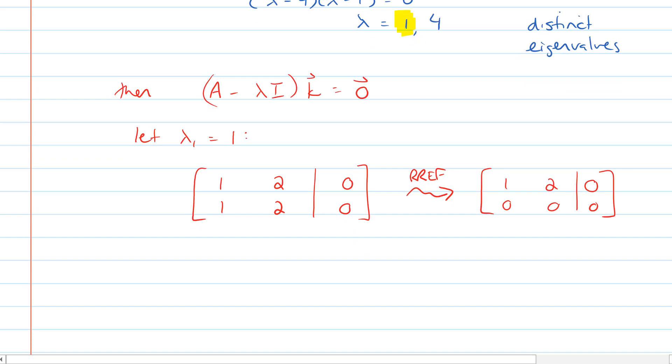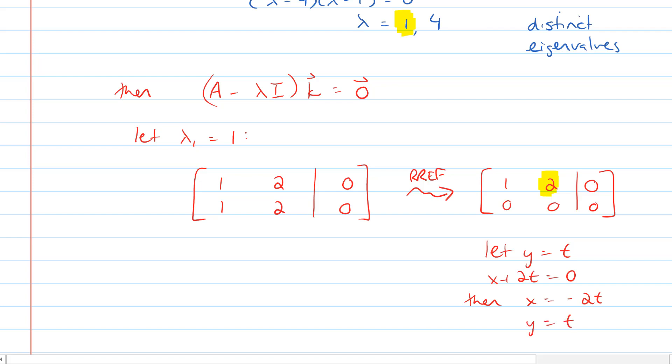Now our y variable here is a free variable, and that means that we let y equal t, and then if we look at the top row, it gives us x plus 2t is equal to 0. That means that x is equal to negative 2t, and y is equal to t, and that gives us our vector k is equal to negative 2 and 1. You could write a t after that if you wished, but I'm just going to label this as k1, that's going to be our eigenvector that's associated with lambda 1 equals 1.